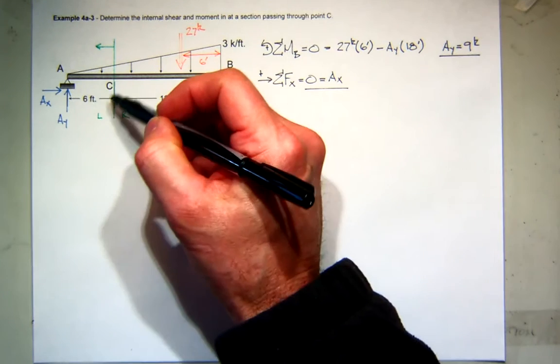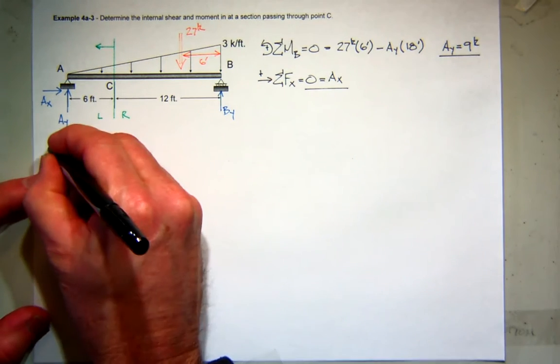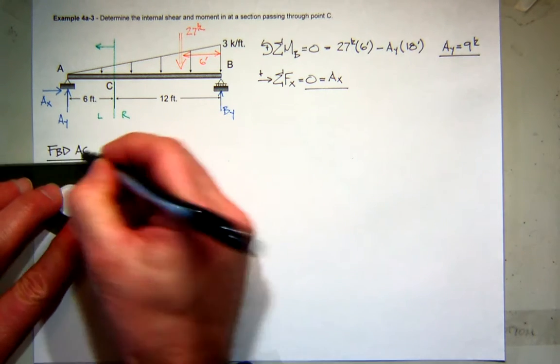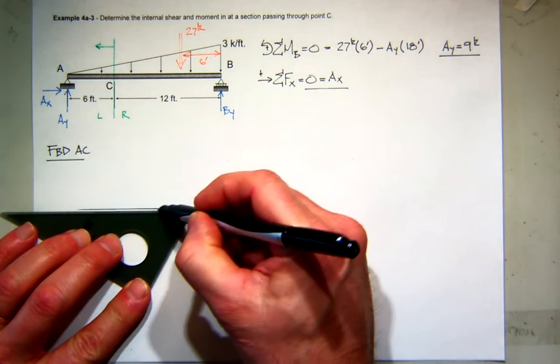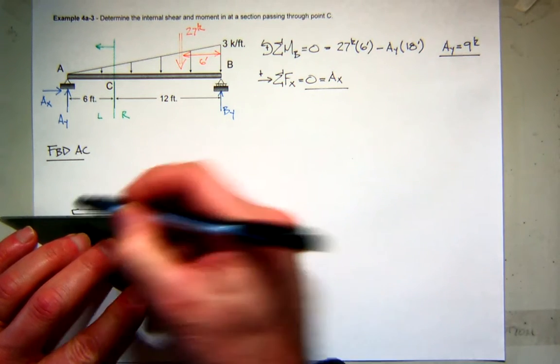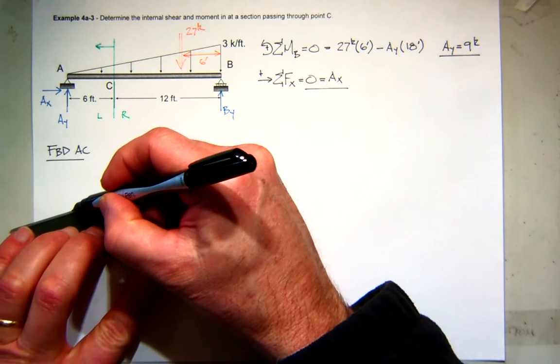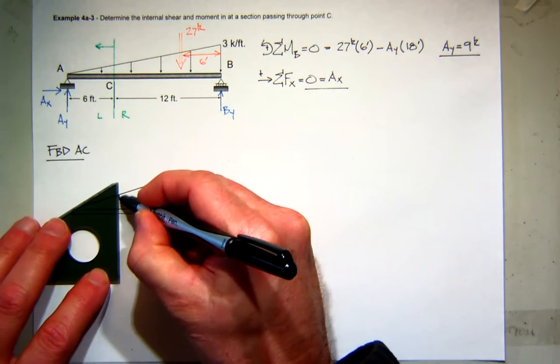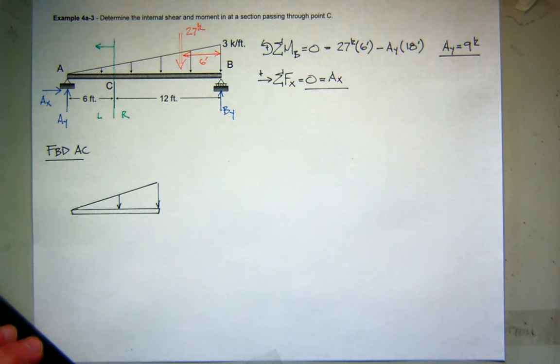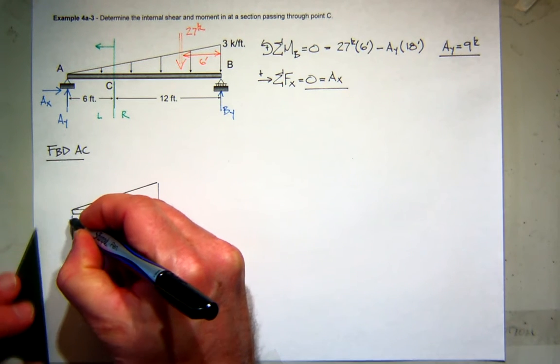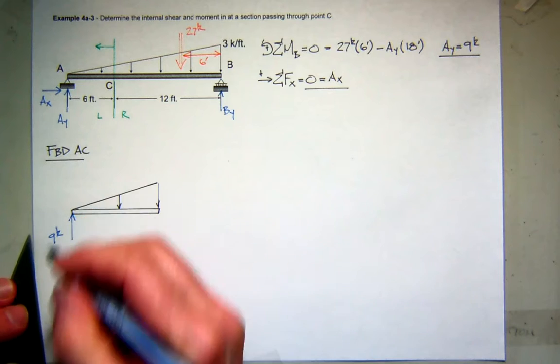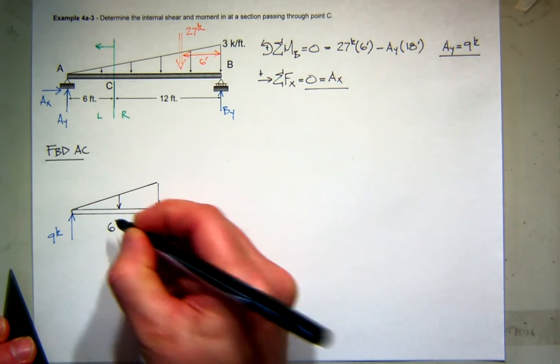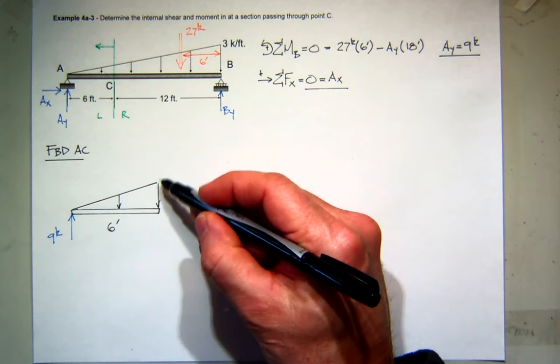So now I'm going to draw a free-body diagram of this section AC. I may make it a little bit bigger so we'll have a little more room than original. So there's the beam with a triangular load on the end. I've got my reaction at A, which is up and equal to 9 kips. There is no AX reaction. I know that distance is 6 feet.